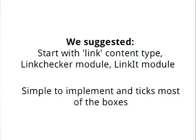The next thing is the link checker module, which actually satisfies two or three of those requirements just out of the box. It runs periodic reports — every time cron runs, it does a sweep of every single link on the site and checks for broken links. You can use that to generate reports and notifications. The other module we suggested was Linkit, which is a way of linking within your Drupal site through the WYSIWYG without manually typing in a URL. You're linking directly to a node ID, not to an alias, which can be really confusing for editors. The alias might change, but the node ID will always be the same. We implemented this, it ticked most of the boxes, and it was pretty simple.